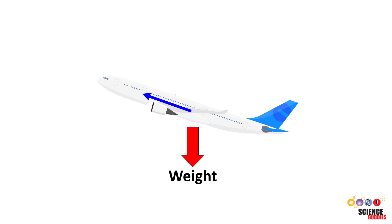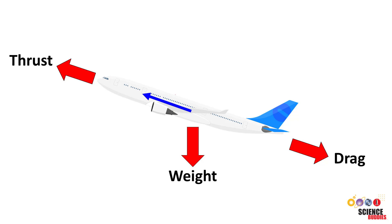The weight force still points down towards the ground because that's the direction of gravity. The thrust force points forward relative to the body of the plane, so note how it is no longer perfectly horizontal. Similarly, the drag force points backward opposite the direction of motion, so it is no longer horizontal.